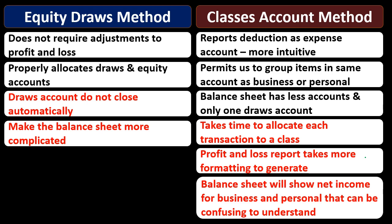The balance sheet will show net income for both business and personal combined, which can be confusing. Because we record these personal items on the profit and loss, QuickBooks shows the combined net income on the balance sheet. It's not really proper for financial accounting — it should properly go into draws rather than net income. For a sole proprietor, it doesn't really matter since everything closes to the same place, but it can be a bit confusing.